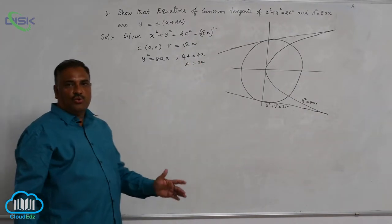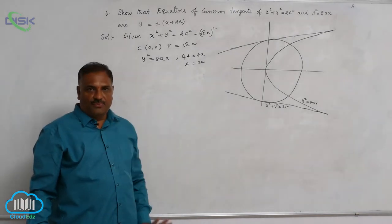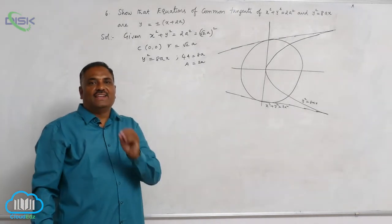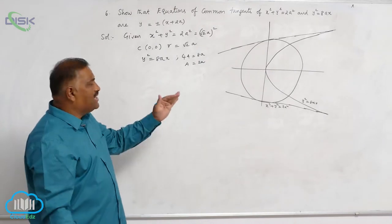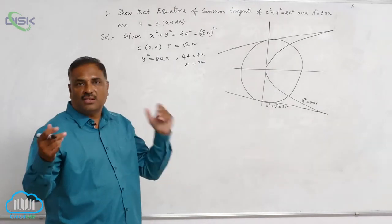Our intention is to find out the common tangent. First we take a tangent to the parabola, and then claim that the same line is tangent to the circle also.